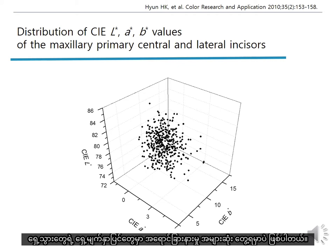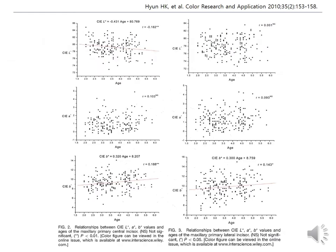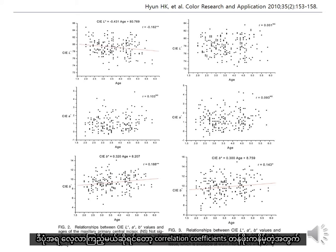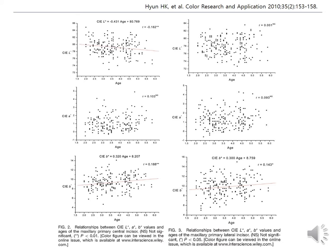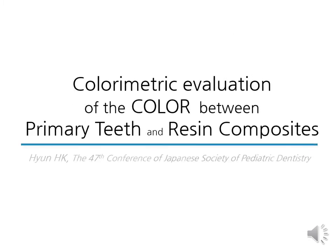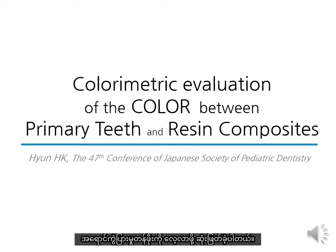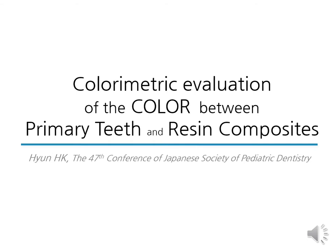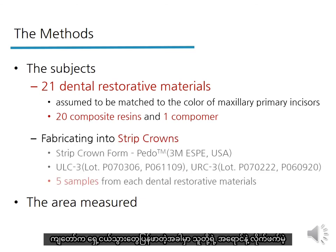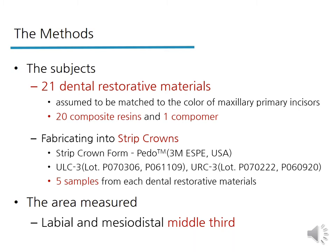We found that most color differences among incisors from the same person were clinically acceptable. The low correlation coefficients show weaker linear relationships between age and colorimetric value. I decided to investigate the colorimetric value of various shades of commercial resin composites available in Korea in order to find the best color-matching composites for primary teeth. I selected 21 dental restorative materials assumed to match well to the color of natural primary incisors.